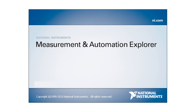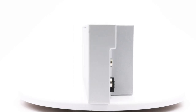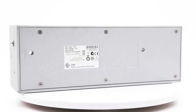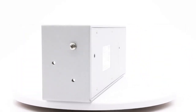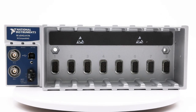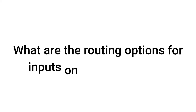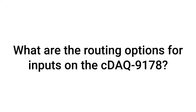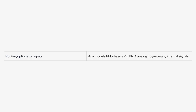Configuration of the software can be carried out using the Measurement and Automation Explorer tool. Here are some common questions about the CDAQ-9178. What are the routing options for inputs? The CDAQ-9178 has the following routing options: many internal signals, analog trigger, chassis PFI/BNC, and any module PFI.